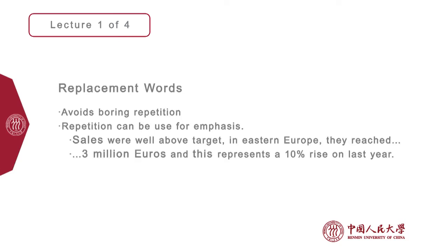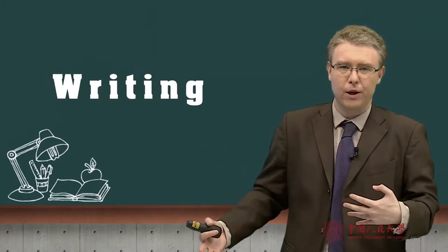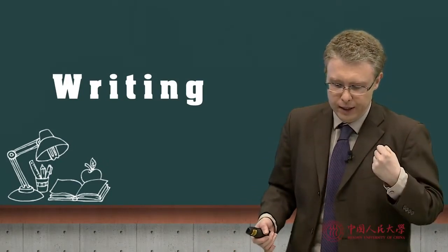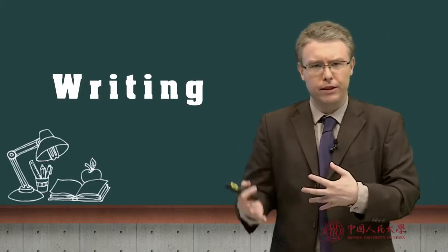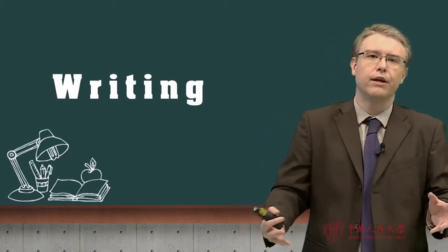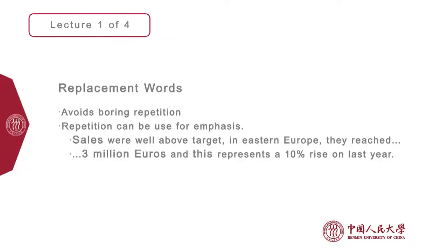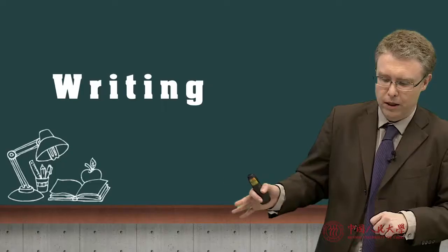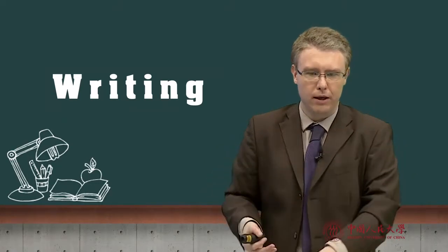Replacement words: you need to have a grasp of vocabulary to use synonyms and avoid repetition — this is how you avoid being boring in English. For example: 'Sales were well above target. They reached three million euros, and this represents a 10% rise on last year.' We don't repeat the word 'sales' — we use 'they,' then 'this.' If we've already defined what something is, we can drop the actual noun and use a pronoun instead, making our language a little more interesting.